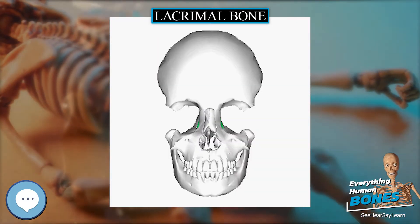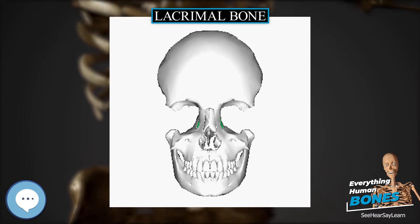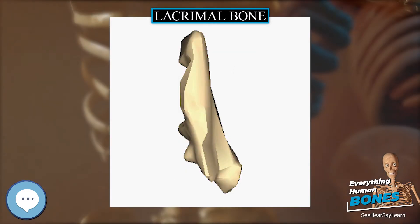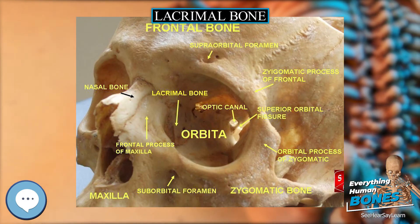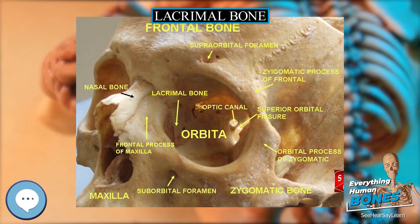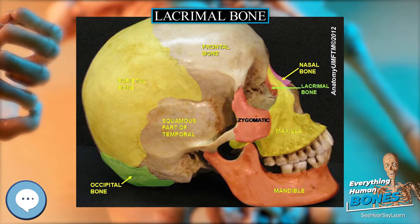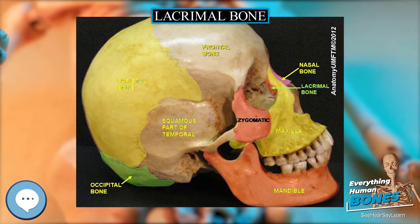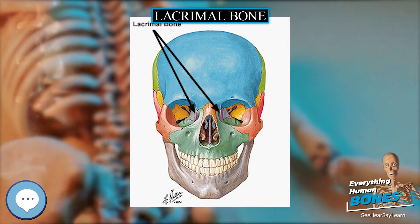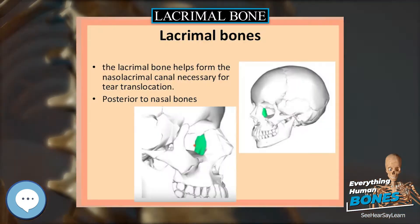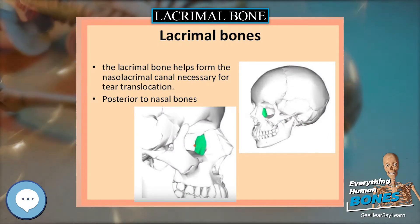The lacrimal bone helps form the nasolacrimal canal, necessary for tear translocation. A depression on the anterior inferior portion of the bone, the lacrimal fossa, houses the membranous lacrimal sac. Tears, or lacrimal fluid from the lacrimal glands, collect in this sac during excessive lacrimation. The fluid then flows through the nasolacrimal duct and into the nasopharynx, resulting in what is commonly referred to as a runny nose during excessive crying or tear production.